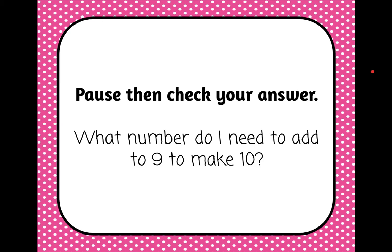There are a couple of ways that are really handy to practice your friendly numbers. One of them is on your fingers, because you have ten fingers. If I said what friendly number goes with five, you could put up five fingers and then look at your other hand and see how many fingers are still down. I see that I have five fingers up and five fingers down, so five is the friendly number that goes with five. Another example: what number do I need to add to six to make ten? I could put down six fingers and I would see that I have four fingers still up, so six and four are friendly numbers.